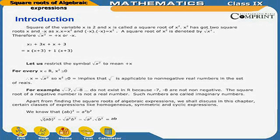Such numbers are called imaginary numbers. Apart from finding the square roots of algebraic expressions, we shall discuss in this chapter certain classes of expressions like homogeneous, symmetric, and cyclic expressions. We know that (ab)² equals a² times b², and √(ab²) equals √(a²) times √(b²), which equals a times b.